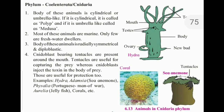Nematoblast-bearing tentacles are present around the mouth. Tentacles are useful for capturing prey, whereas nematoblasts inject toxin into the body of prey. Those are useful for protection too. Examples include Hydra, Adamsia, Physalia, Aurelia, Corals, etc.